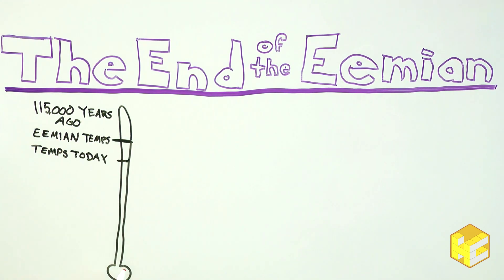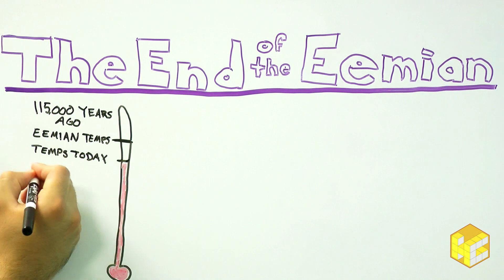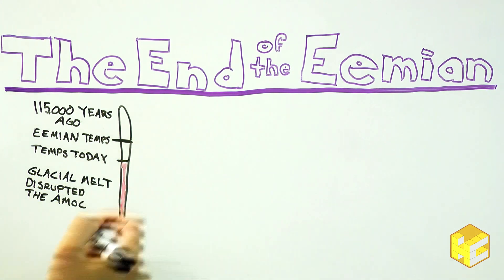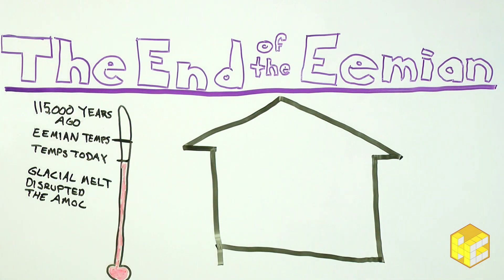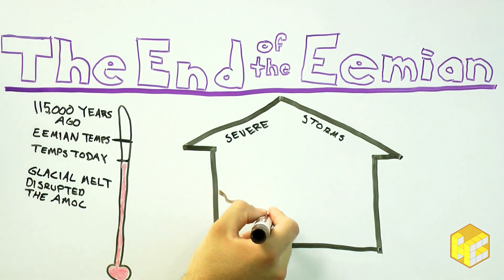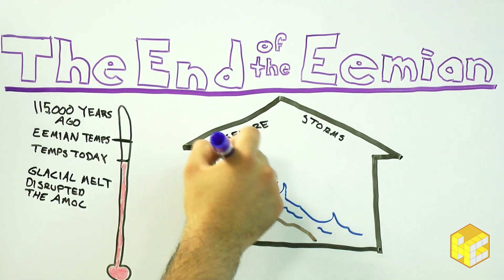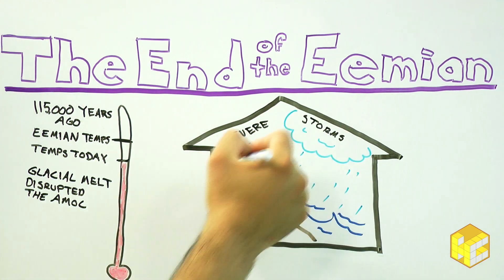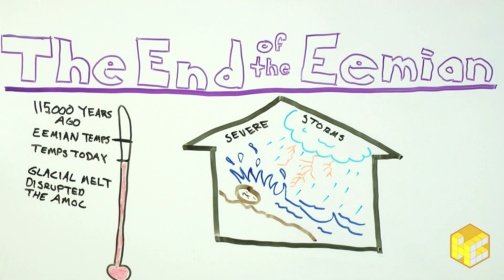Glacial melt disrupted ocean currents, greatly slowing the AMOC, which caused a big uptick in severe storms due to more extreme temperature differences and rising sea levels. Research on the climate during the period points to enormous boulders deposited on shorelines in the affected areas, as well as other erosional signs of ancient storms.